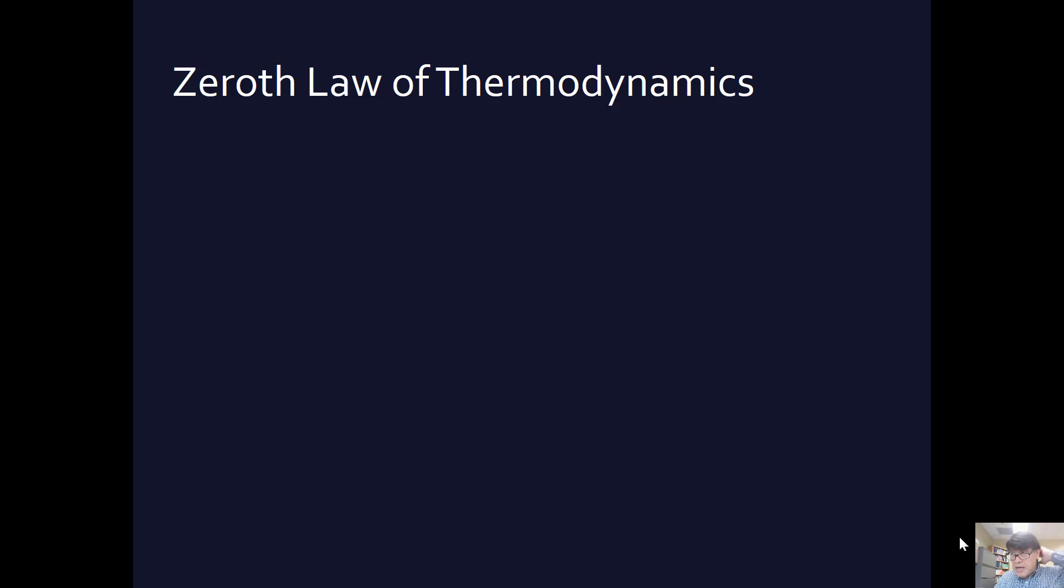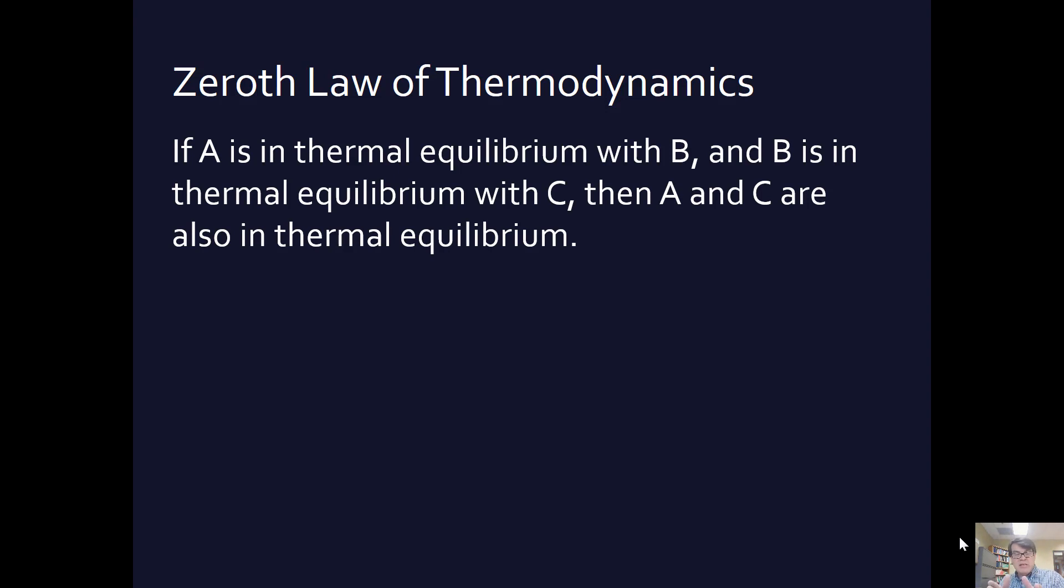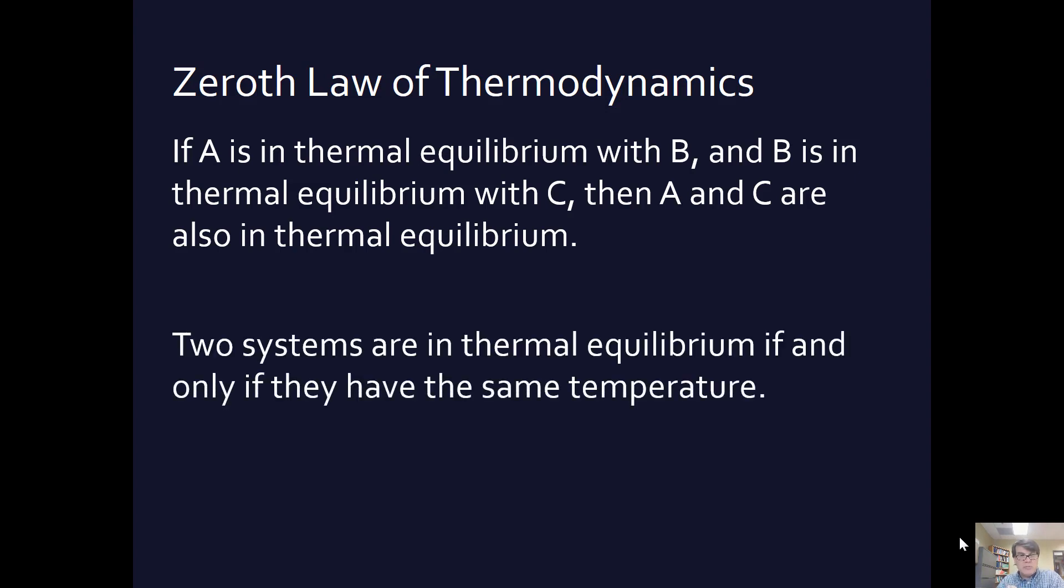So we end this video with the zeroth law of thermodynamics. It's the zeroth law because they came up with it after they've already come up with the first and second, they'd already come up with the other laws of thermodynamics. But this seemed very fundamental and so they called it the zeroth. Wasn't that clever? So the idea is that if A is in thermal equilibrium with B and if B is in thermal equilibrium with C, then by the transitive property of thermodynamics, I just made that up, then A and C are also in equilibrium with each other. This seems to make a certain amount of common sense. So two systems are in thermal equilibrium if and only if they have the same temperature.